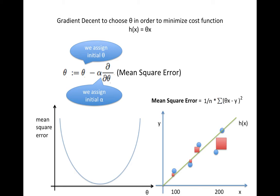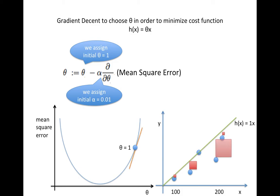Here the parameter is theta. Suppose our linear equation is theta times x. Gradient descent will update theta using this equation: theta will be theta minus the learning rate times the derivative of the mean square error. I will demonstrate this shortly.